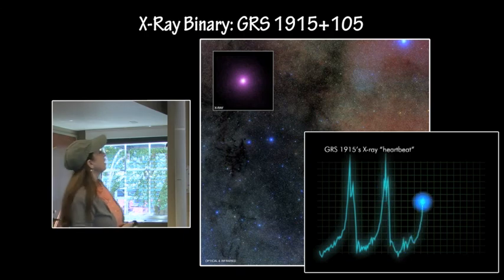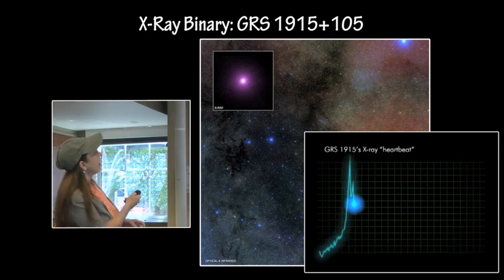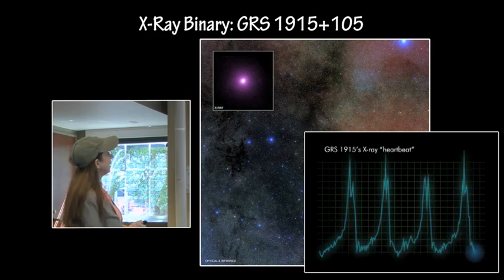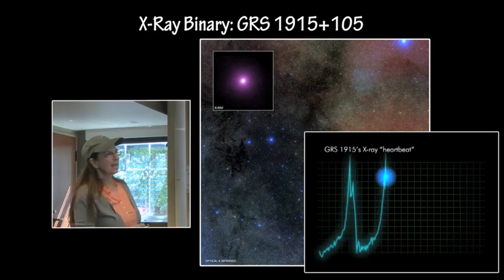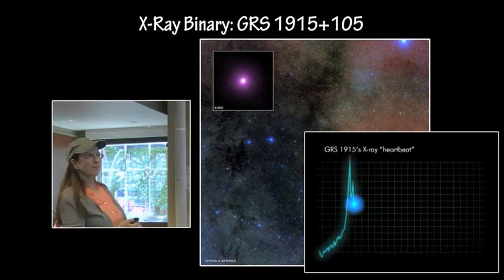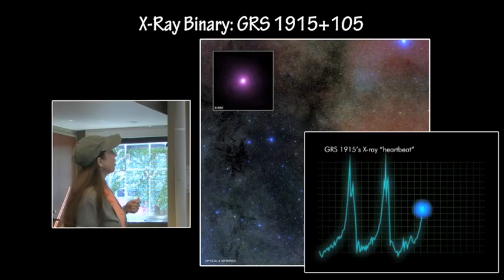We have an X-ray binary, GRS 1915 plus 105, and this one is producing a light curve that is an X-ray heartbeat, kind of similar to a Cepheid variable doing its optical heartbeat.